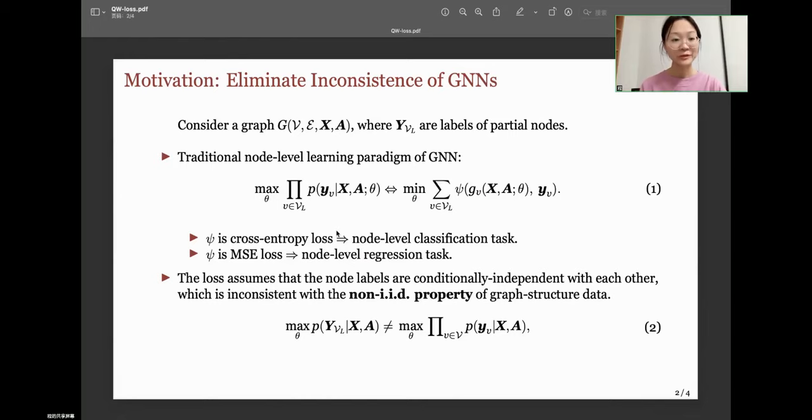First, the motivation. Consider a graph G with vertex set V, edge set E, feature matrix X, and adjacency matrix A, where Yv are labels of partial nodes. We would like to learn a GNN to predict the labels of unknown nodes.